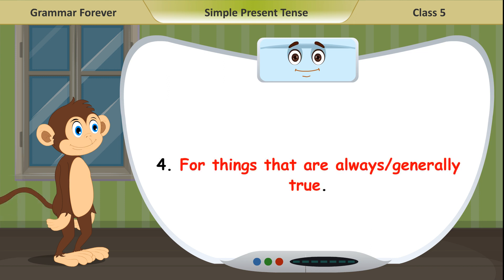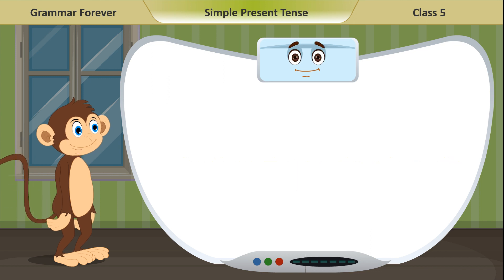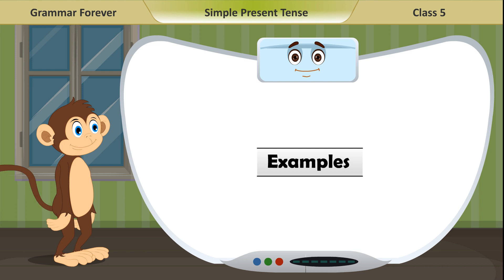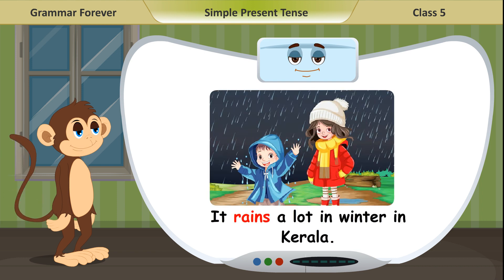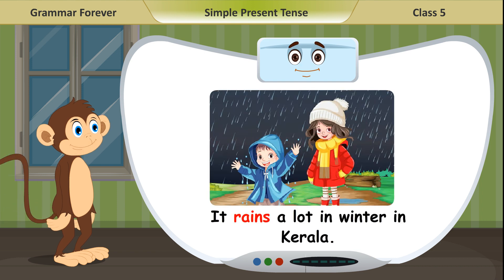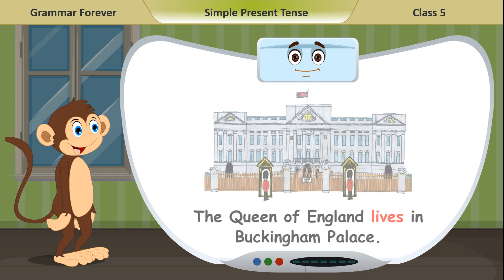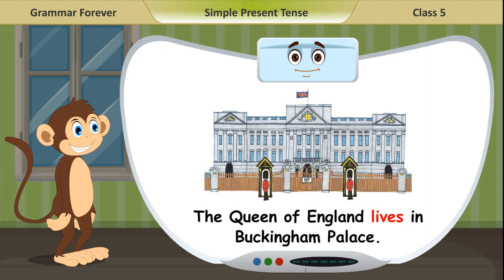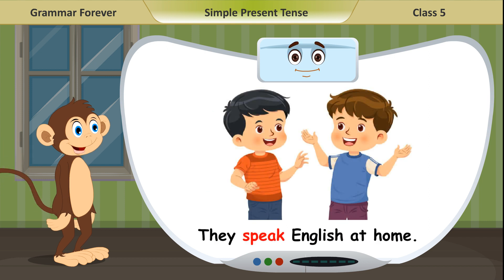We use the Simple Present Tense for things that are always generally true. Examples: It rains a lot in winter in Kerala. The Queen of England lives in Buckingham Palace. They speak English at home.